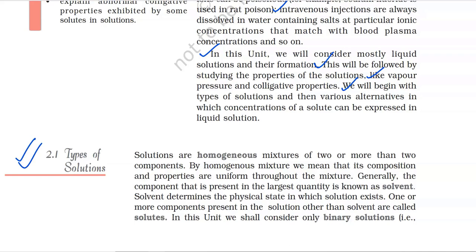Solutions are homogenous mixtures of two or more than two components. By homogenous mixture, we mean that its composition and properties are uniform throughout the mixture. Generally, the component present in the largest quantity is known as the solvent. Solvent determines the physical state in which the solution exists. One or more components present in the solution other than solvent are called solutes.